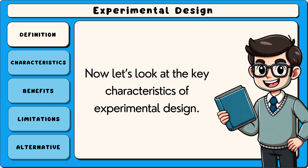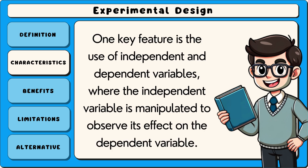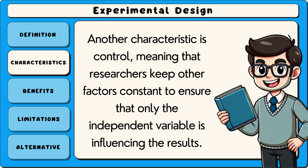Now let's look at the key characteristics of experimental design. Experimental design has several important characteristics that make it effective for testing hypotheses. One key feature is the use of independent and dependent variables, where the independent variable is manipulated to observe its effect on the dependent variable. Another characteristic is control, meaning that researchers keep other factors constant to ensure that only the independent variable is influencing the results.